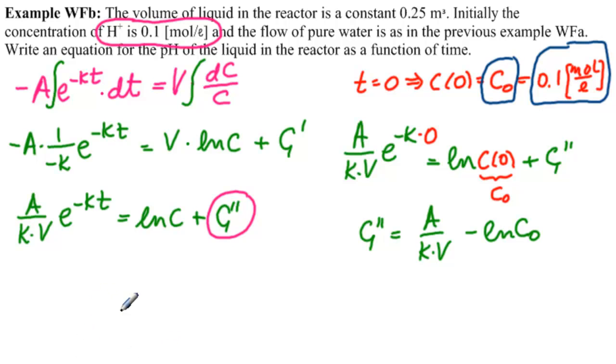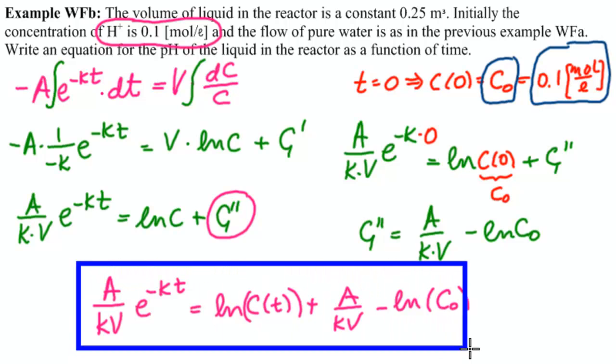So what do we get for our final integral? We get A over kV times e to the minus kt equals ln of C of t plus A over kV minus ln of C0. So that is our solution to that differential equation.